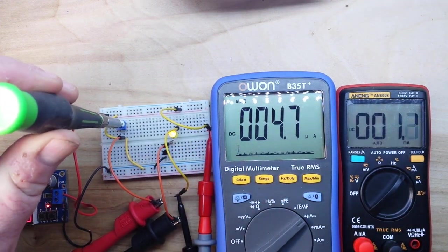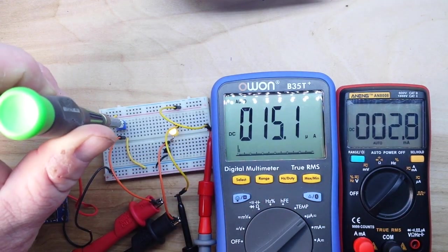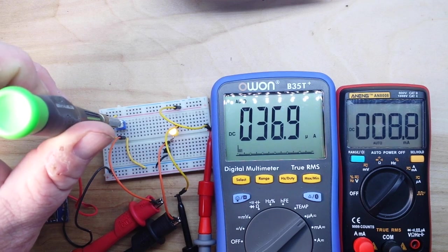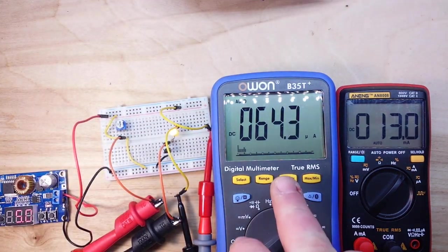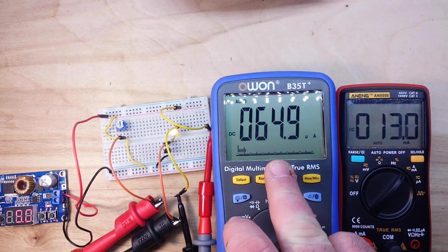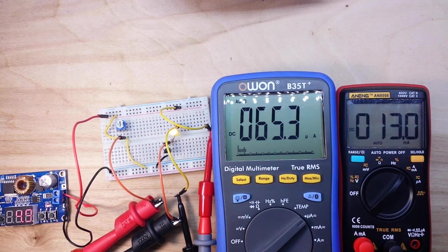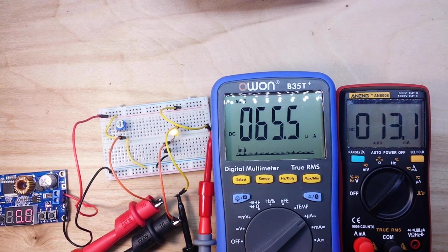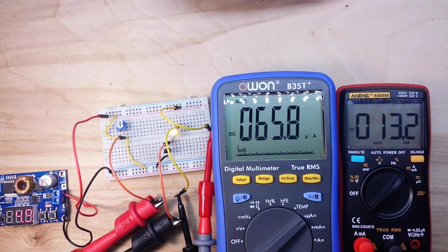And if we turn this baby all the way up, there's 64 microamps going into the base, 13 milliamps coming out of or going into the collector. So that is the transistor as an amplifier.